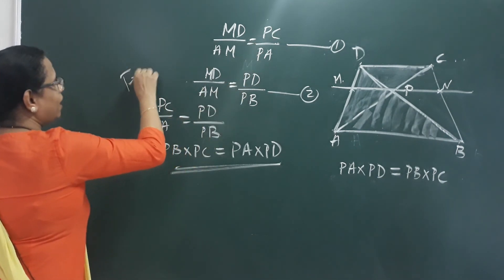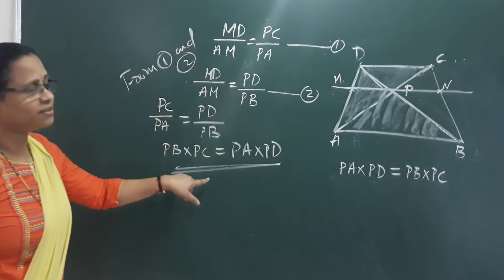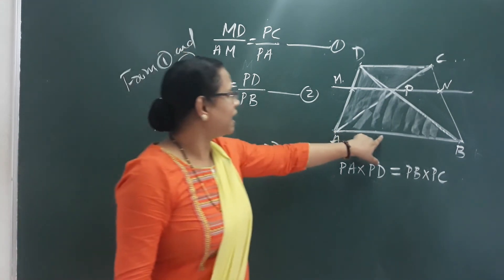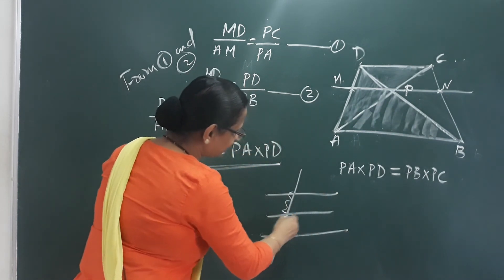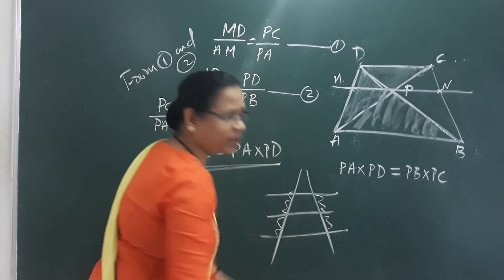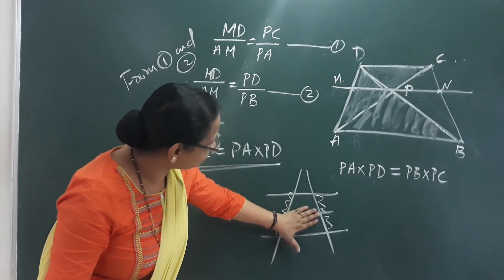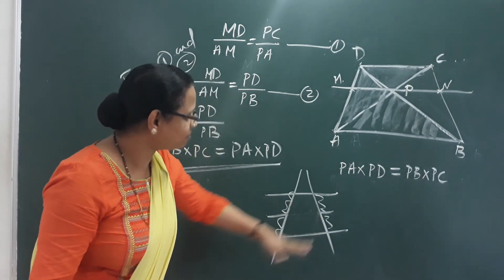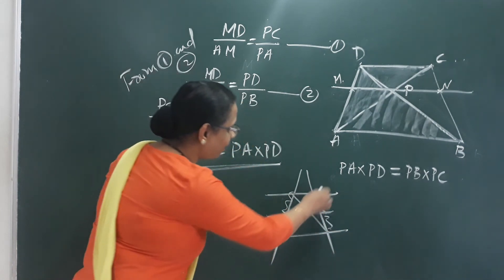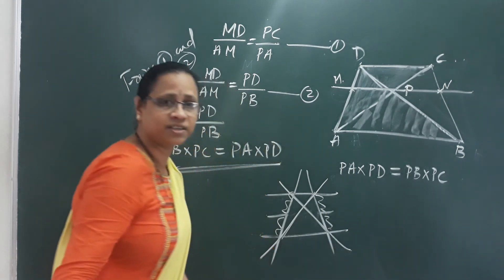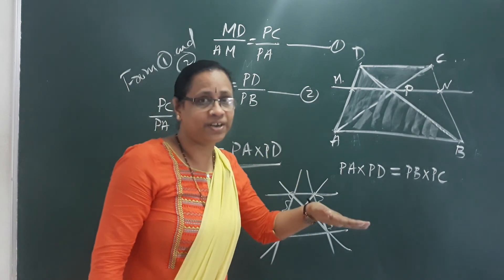How do we consider it? From equations 1 and 2, using the property that three or more parallel lines cut transversals in the same ratio. Here in the trapezium, the diagonals give the same ratio. So we have proved that PA into PD equals PB into PC. Thank you. This exercise is going to continue.